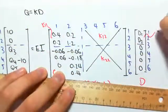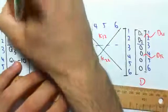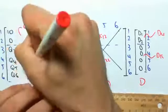This would be our D unknown, our D known, this would be our Q known, and this would be our Q unknown.